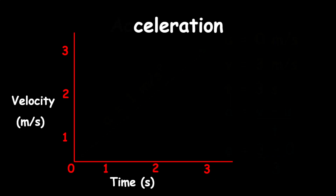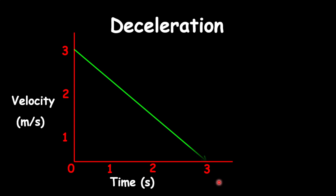Now let's look at deceleration. Deceleration is a decrease in velocity over time, so the graph will look like this. As velocity is decreasing on the y-axis, time on the x-axis is increasing. So over time, the velocity is actually getting lower and lower. Once the velocity is dropping, we have deceleration.